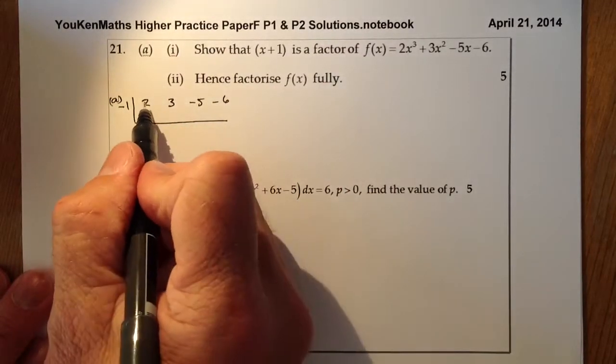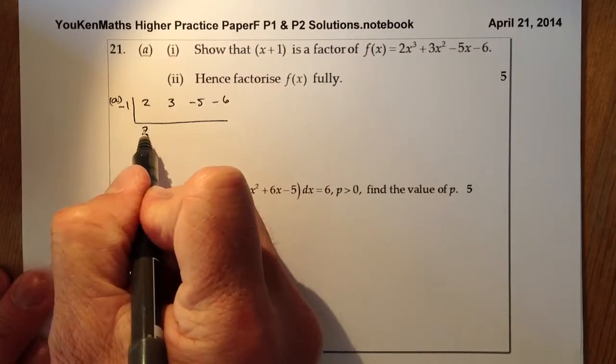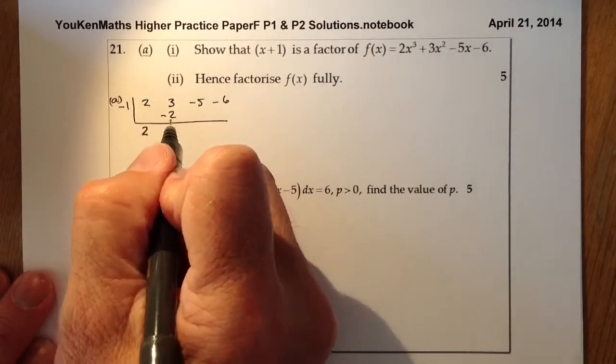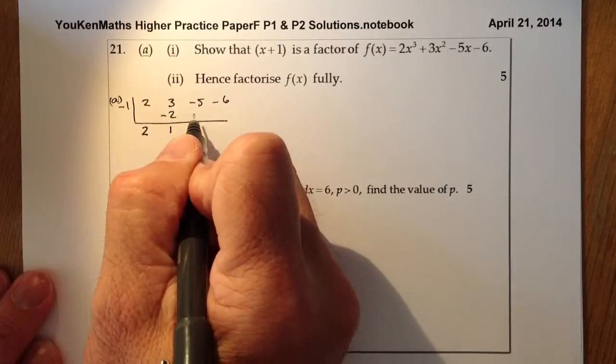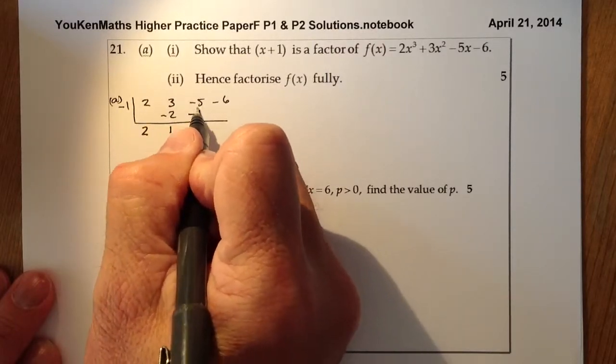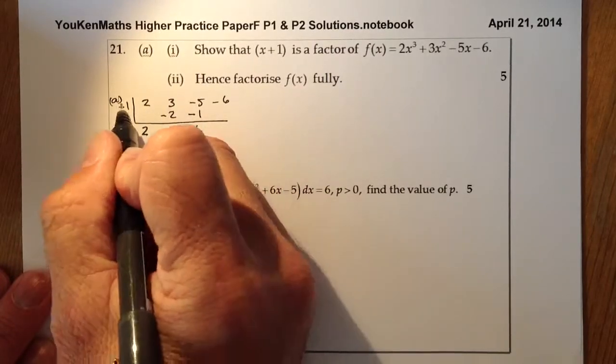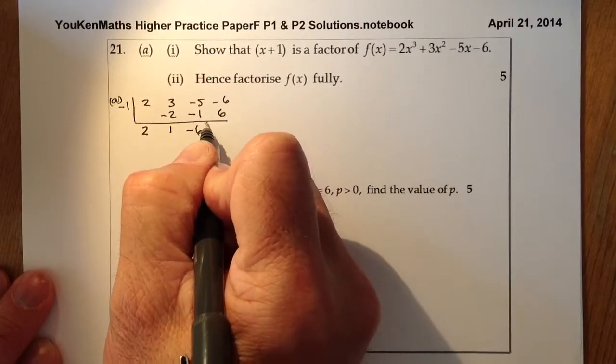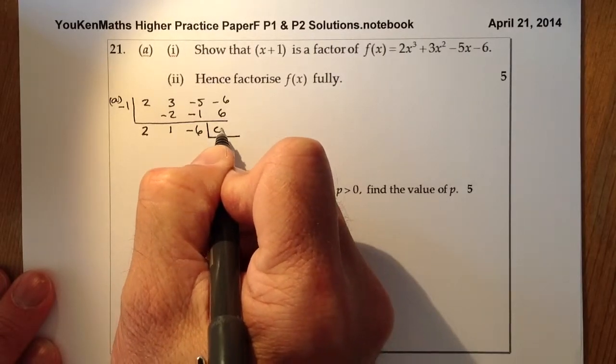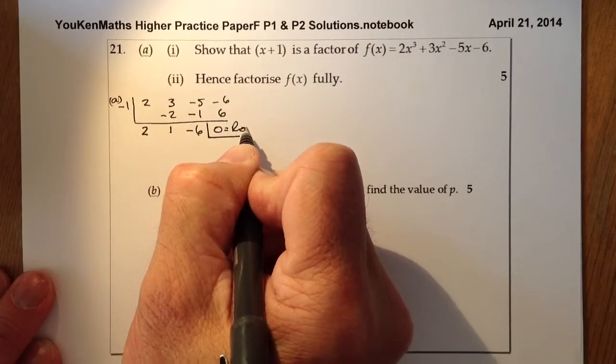So the synthetic division: bring down the 2, multiply by -1, gather them together to give 1, multiply by -1 gives -1, gather them together, multiply by -1 gives 6, and that gives 0 when I gather them. That equals the remainder.